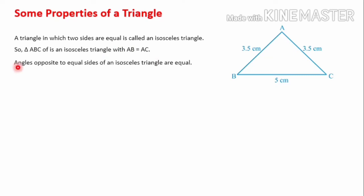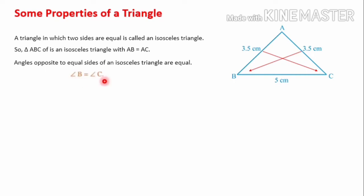The next property: angles opposite to equal sides of an isosceles triangle are equal. This is a very important property. Here AB and AC are equal sides. The angle opposite to AB is angle C, and the angle opposite to AC is angle B. So angle B is equal to angle C.